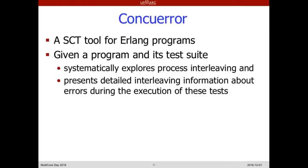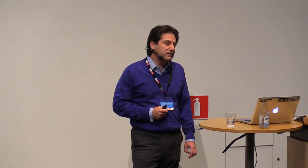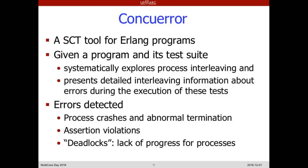We have built two tools. The first is called Concuerror — for concurrency error — a systematic testing tool for Erlang programmers. Given a program and a test to run with a correctness criterion, it systematically explores all process interleavings and presents detailed interleaving information about all errors in the test execution. The errors it detects include process crashes and abnormal termination, assertion violations where you annotate your program, and deadlocks — lack of progress for Erlang processes.